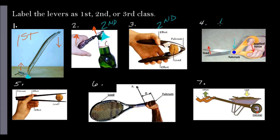Number four: the fulcrum is in the middle. The only class with a fulcrum between input and output is a first class lever. Number five looks similar to the nutcracker, but if you look a little bit closer, the load and your input are switched — the walnut is not next to the fulcrum; the walnut is at the end. So this is going to be a third class lever.